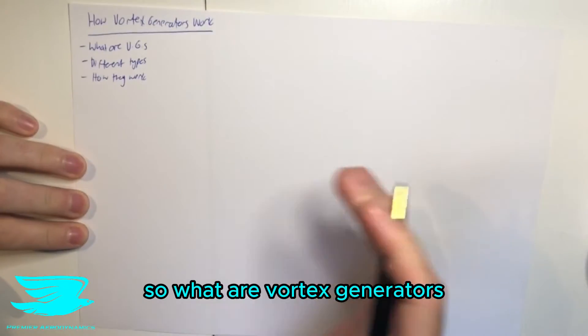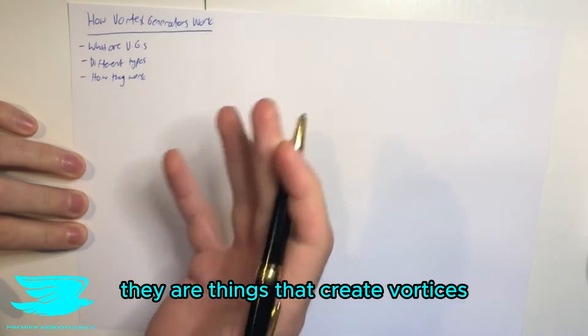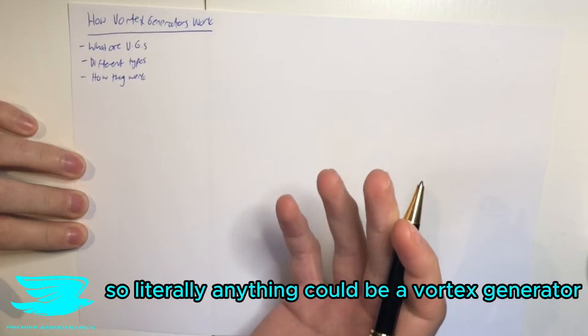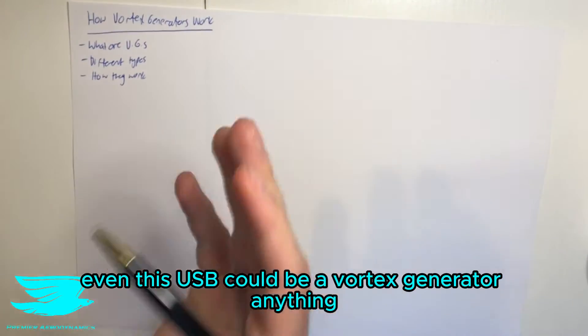So what are vortex generators? Well, as the name suggests, they are things that create vortices. So literally anything can be a vortex generator. This pen could be a vortex generator, this finger, even this USB could be a vortex generator, anything.